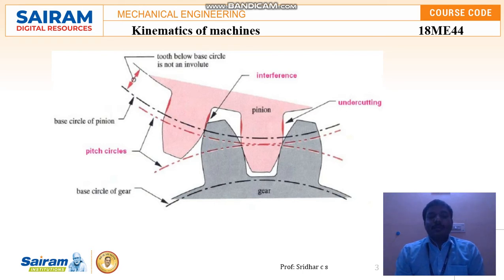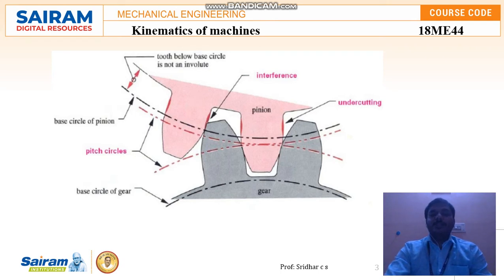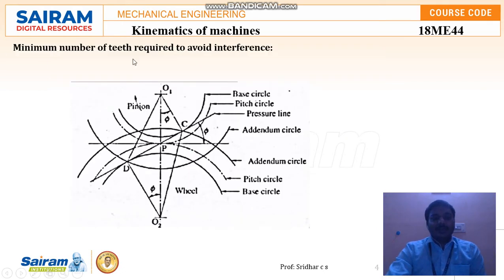Next, we discuss how many teeth should be present to avoid interference. To find the minimum number of teeth required to avoid interference: considering the example with O1 and O2 — this is the pinion and this is the rack rotating in opposite directions. This line is the base circle, this is the pitch circle, and this is the center line.